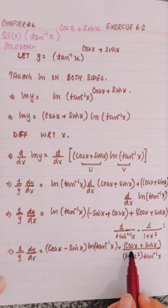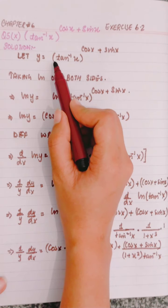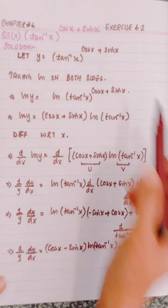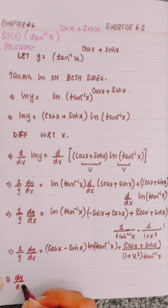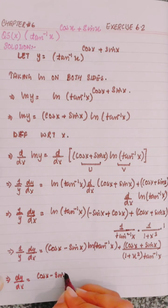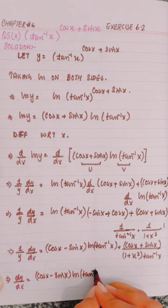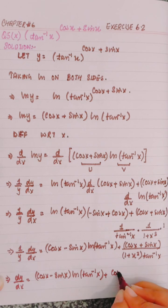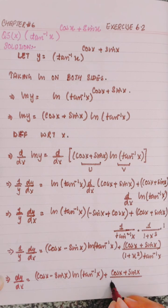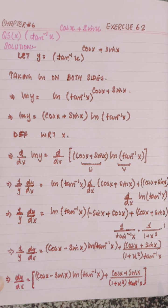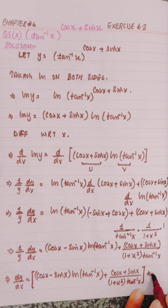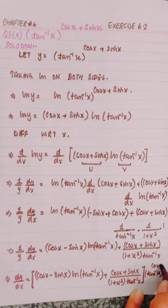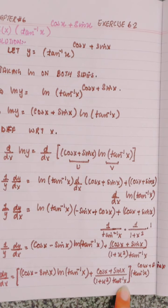In the next step, I will shift y to the right hand side and replace y with tangent inverse x to the power cos x plus sin x. So dy by dx is equal to cos x minus sin x into ln of tangent inverse x, plus cos x plus sin x divided by 1 plus x squared into tangent inverse x, all multiplied by y, where y is tangent inverse x to the power cos x plus sin x. This is the answer.